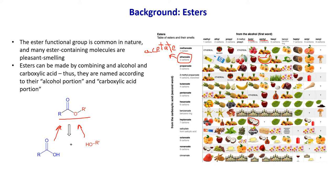For coconut flavor, you would take butanol and react it with heptanoic acid to get butyl heptanoate as an ester. The naming of the ester: you take the first word from the alcohol and combine it with the carboxylic acid name as the second word. For a minty flavor, it will be propyl salicylate — the reaction between propanol and salicylic acid.